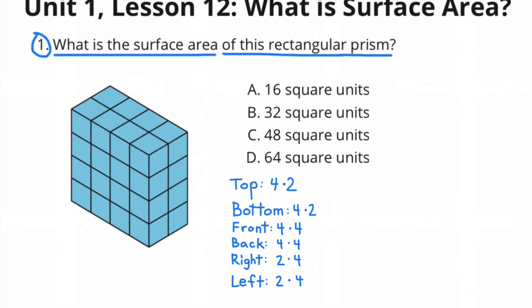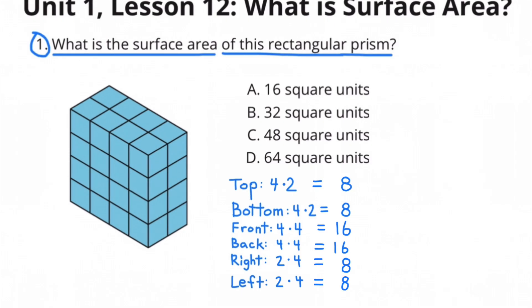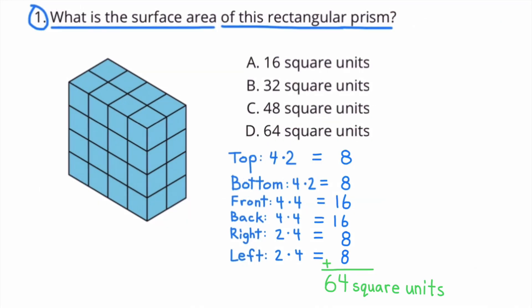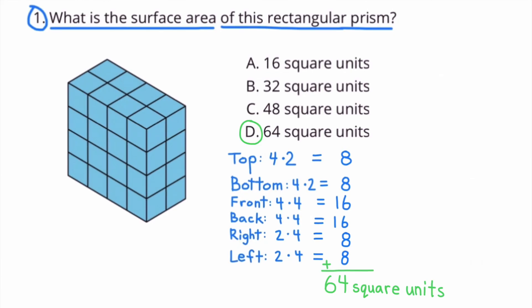4 times 2 is 8, 4 times 4 is 16, and 2 times 4 is 8. The total of these combined areas is 64 square units. This rectangular prism's surface area is 64 square units.